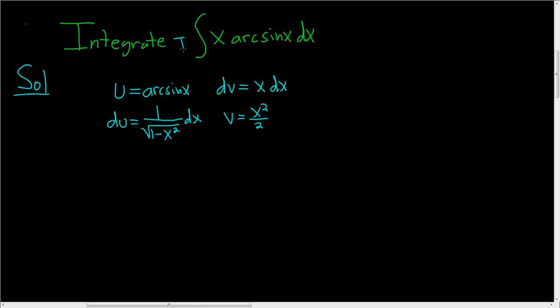I'm going to go ahead and call this i, so I don't have to write it down again. And so i is equal to, this is uv using the integration by parts formula, so x squared over 2 arcsine x minus the integral of vdu.